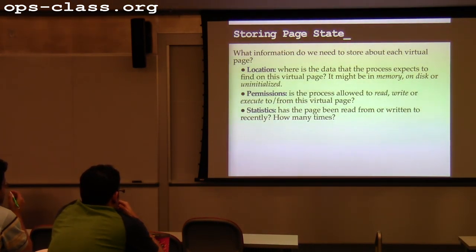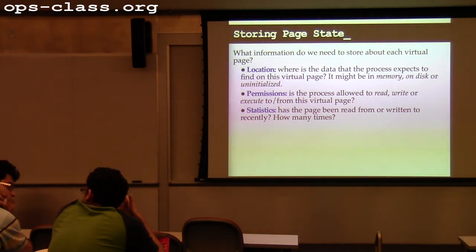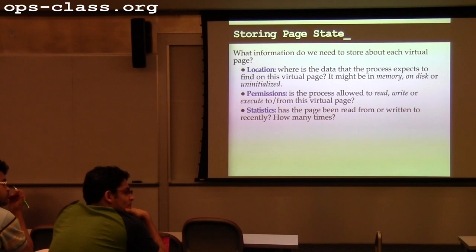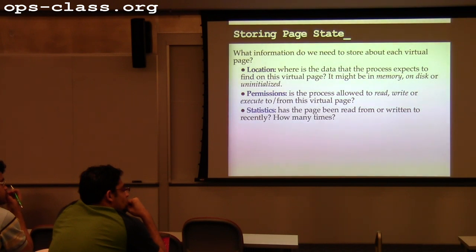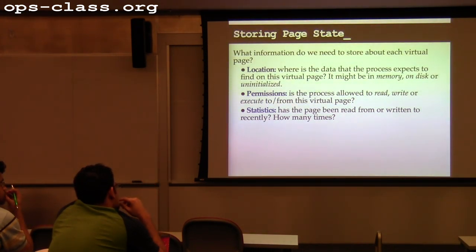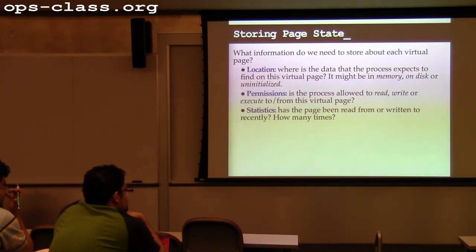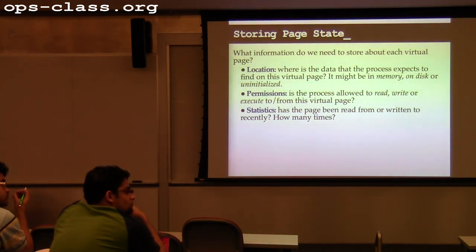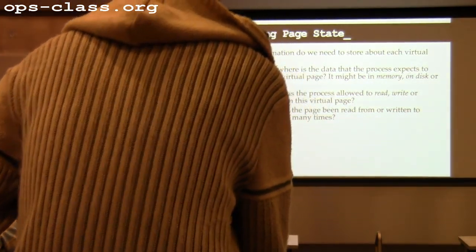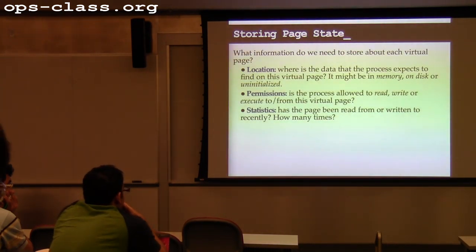How does the process ID come into play here? It's not actually stored in the PTE, but it's used by the kernel because virtual addresses are per-process — you can have similar virtual addresses across processes. When the MMU says 'I don't know how to translate this address,' the kernel starts running, and it knows what process is running because it scheduled it.